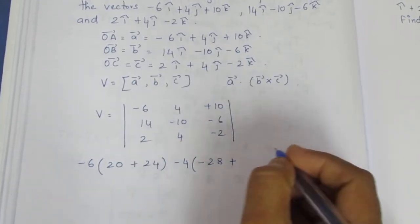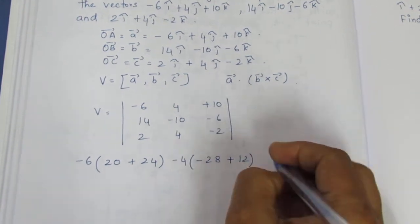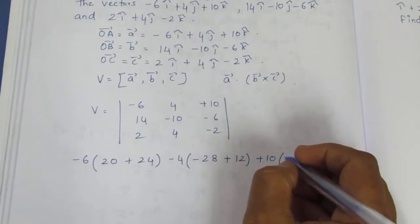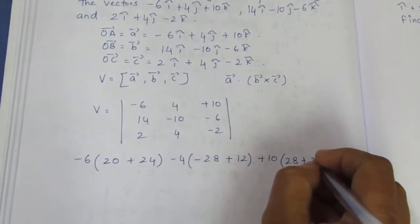Minus 6 times 2 is 12, plus 10. This is one row, this is one column, this is two multiply: 28 plus 20.